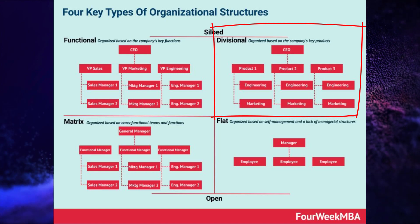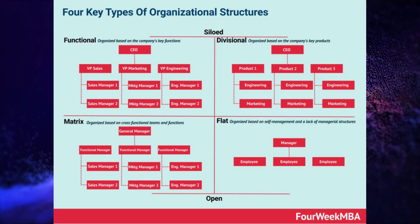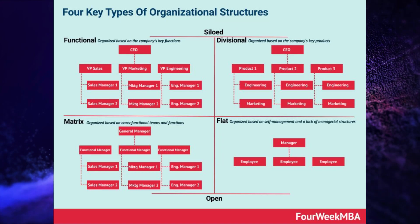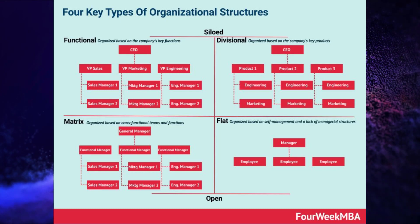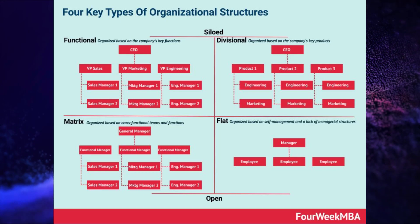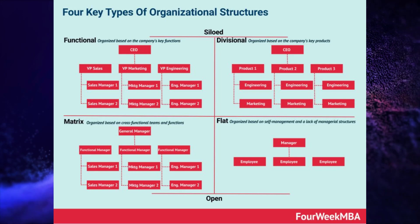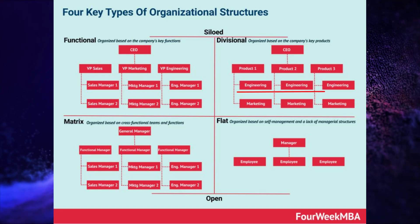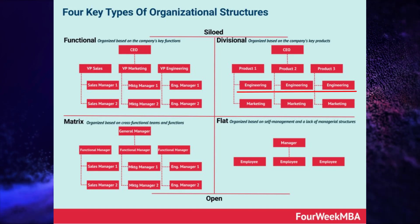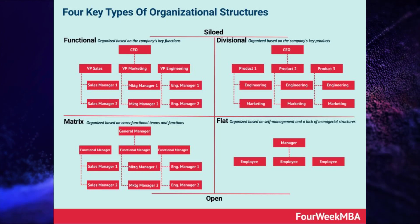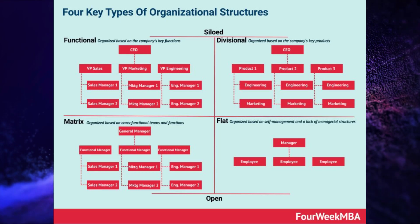The second type is divisional — this groups employees based on specific products, geographic locations, or customer segments. The divisions operate as semi-autonomous units with their own functional departments, resources, and decision-making authority. This allows for better focus and customization within each division, but it can lead to duplication of functions across divisions and coordination challenges between them.